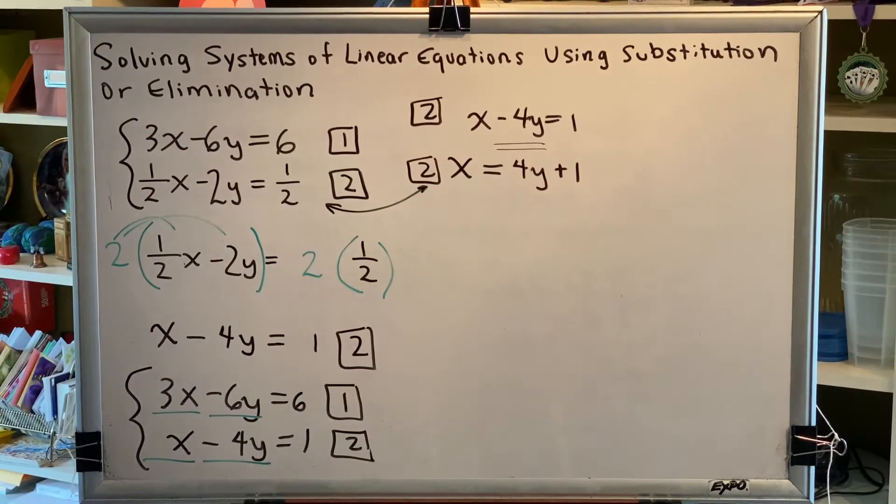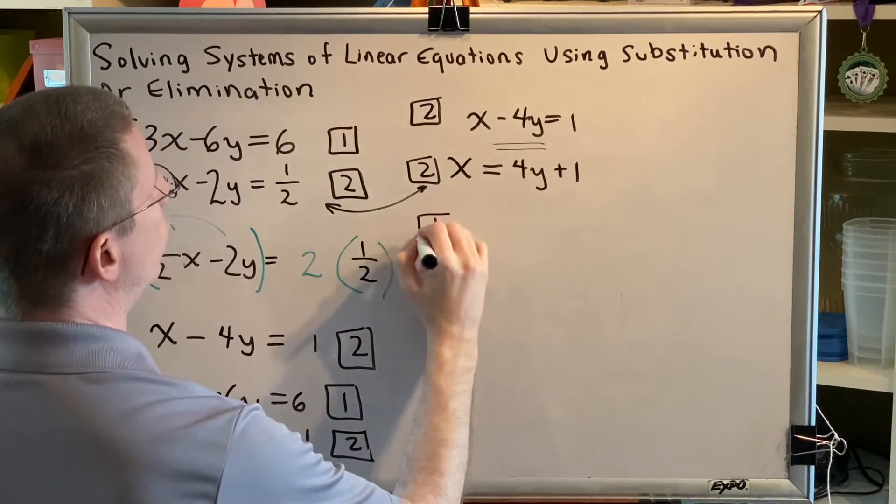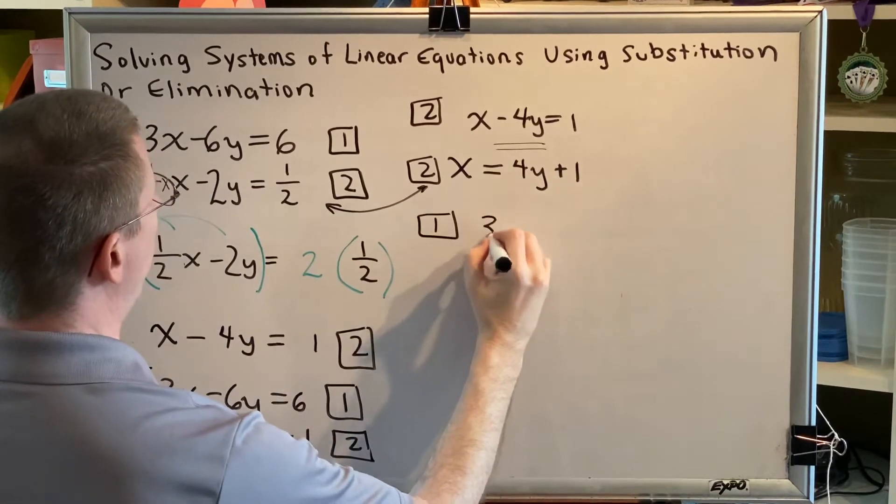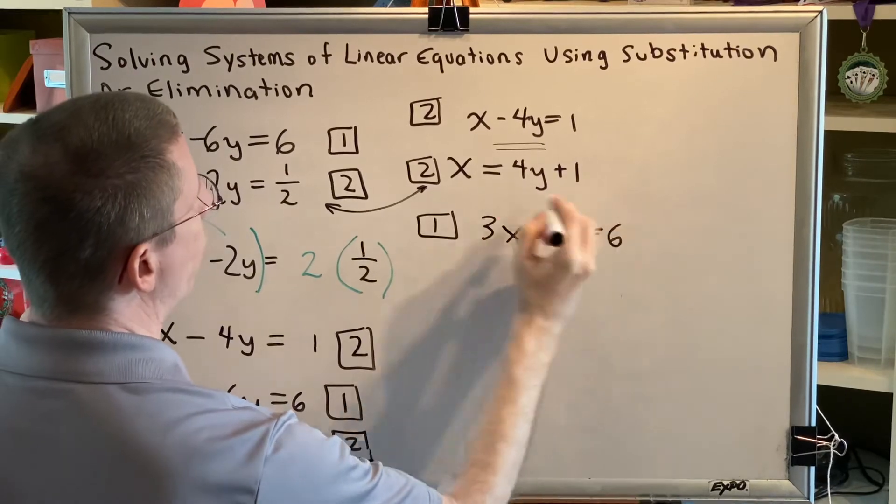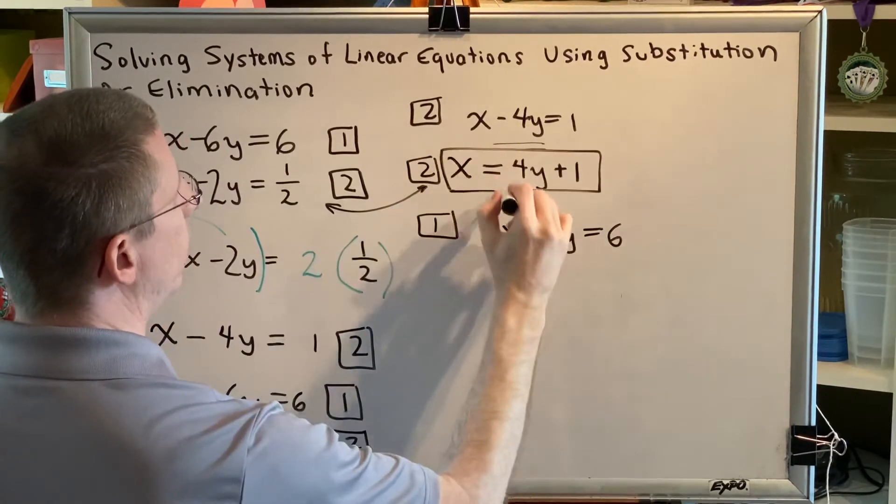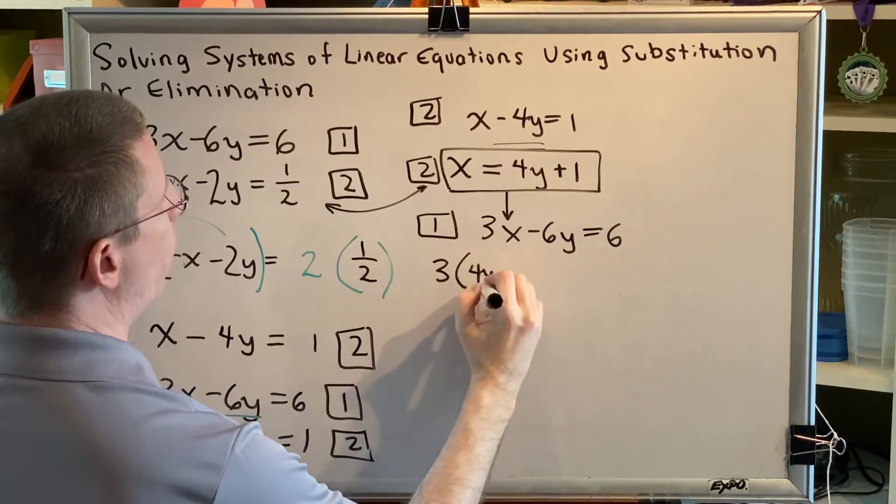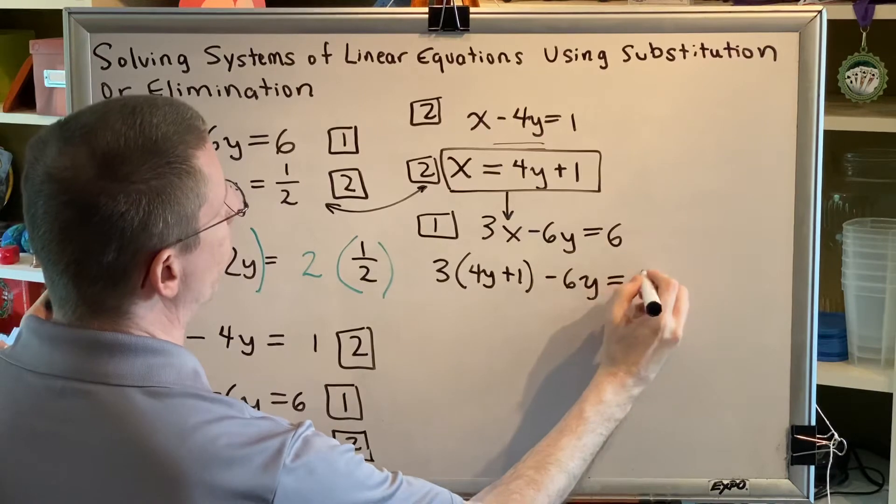We're now ready to substitute. If you solve for a variable in equation 2, then you substitute for that variable in equation 1. Equation 1 is 3x minus 6y equals 6. So we get 3 times the sum 4y plus 1 minus 6y equals 6.